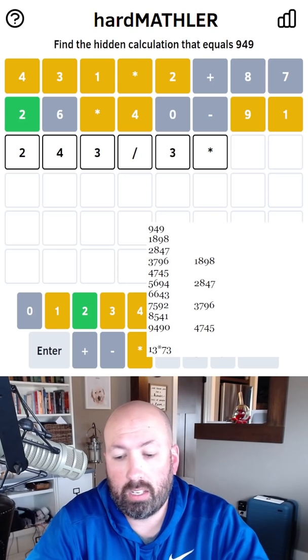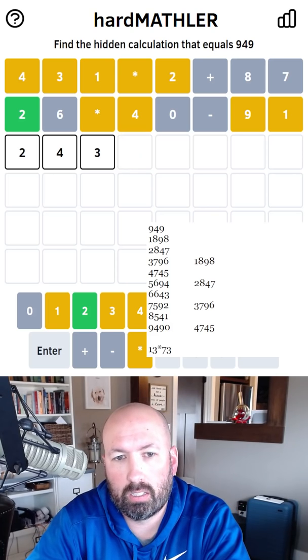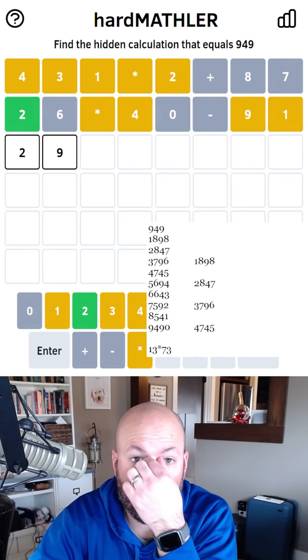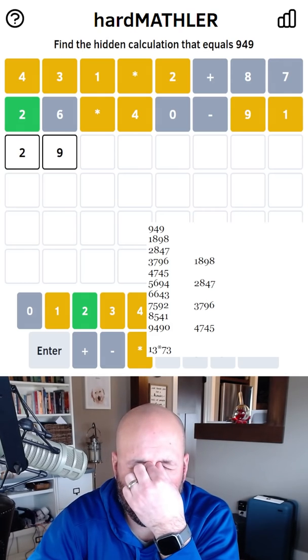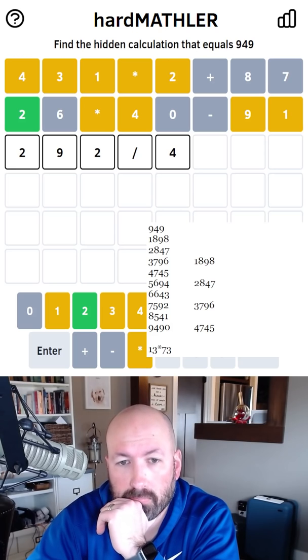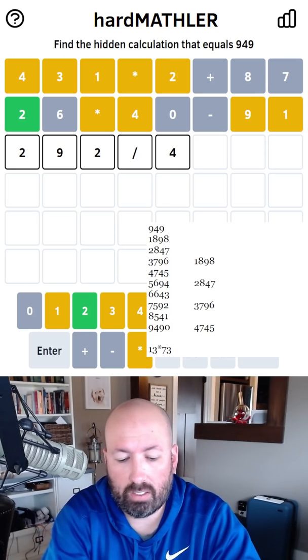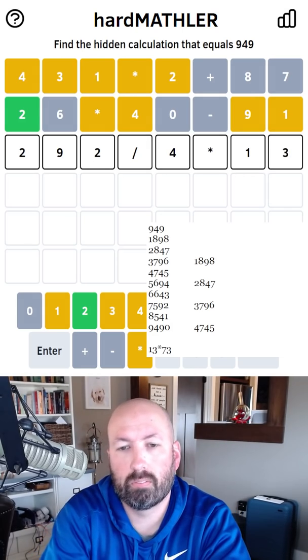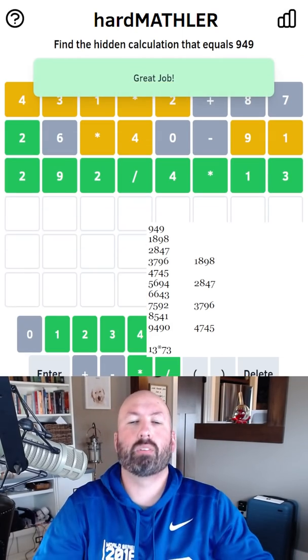Something that divides to get 73. 73 times 4 would be 292 divided by 4. That would give us 73. That might actually work. Let's try that. Oh, that was it!